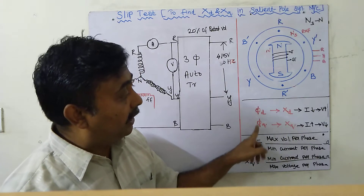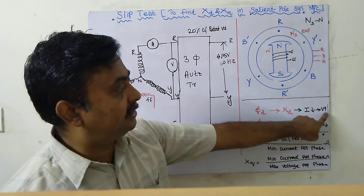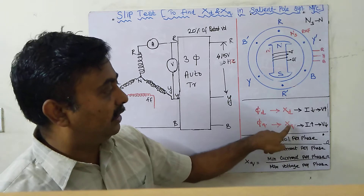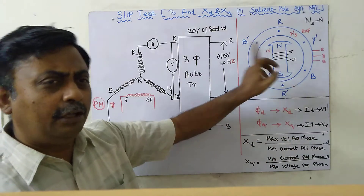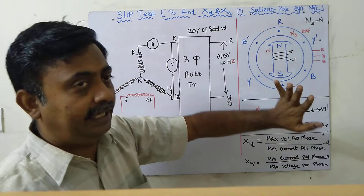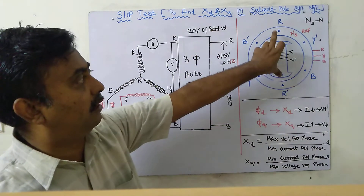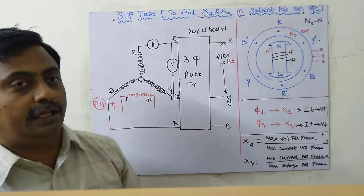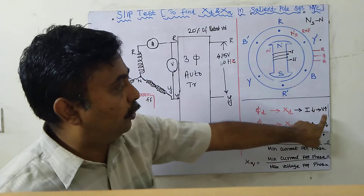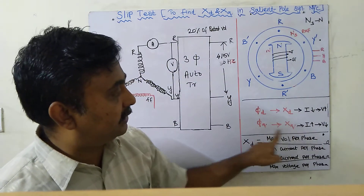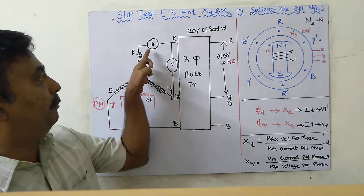When the rotating magnetic field crosses the Q-axis, a quadrature axis flux is induced, which offers a reactance called Xq. When Xd is offered, the current will be very low and the voltage will be high. When Xq is offered, the current will be more and the voltage will be less. Since the field crosses the rotor repeatedly, the voltmeter and ammeter both oscillate between maximum and minimum values.